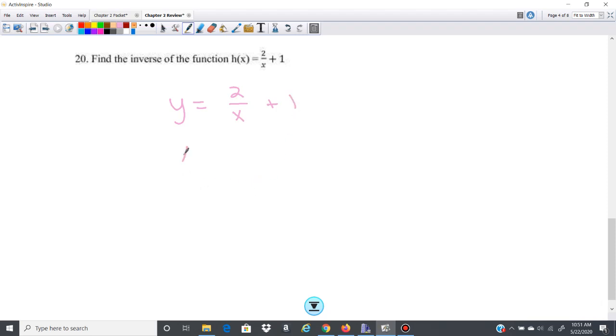So we're going to switch the x and the y. x equals 2 over y plus 1. And then we're going to solve for y. So we're going to subtract 1 from both sides. x minus 1 equals 2 over y.